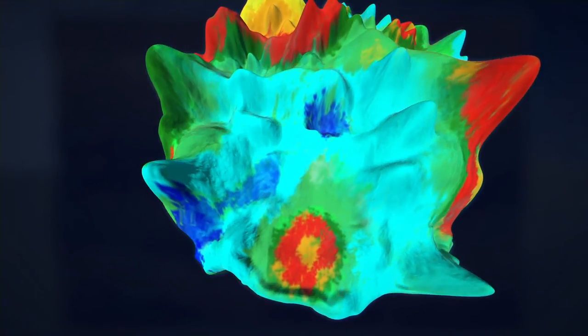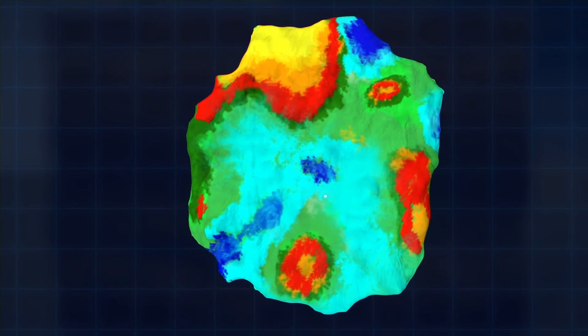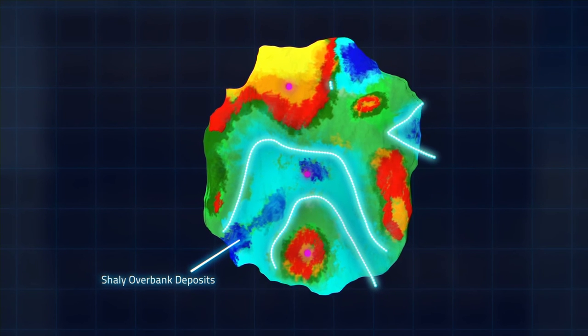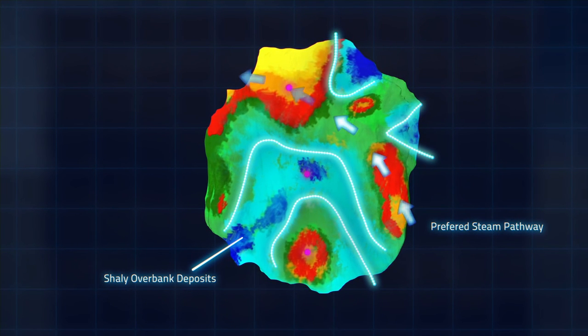Ultimately, knowing where the steam fronts travel, where lateral barriers divert the steam, and how quickly they move, will help to optimize the development for the best possible efficiency.